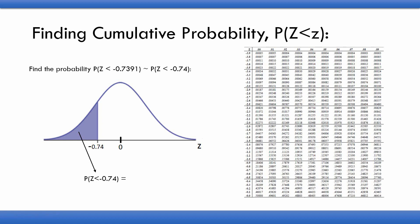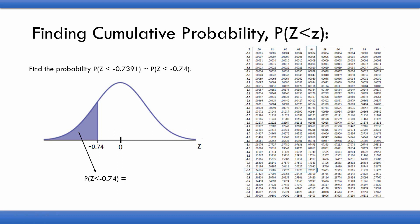To get the probability from the cumulative normal probability table, we identify the row and corresponding column whose labels add up to the Z-score. Our Z-score is minus 0.74, so we identify the row with label minus 0.7 and the column with value 0.04. The intersection gives us the probability for Z = minus 0.74, which is 0.22965.